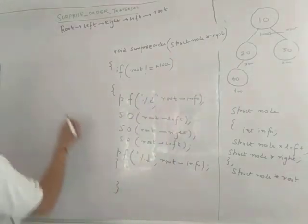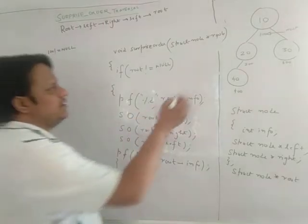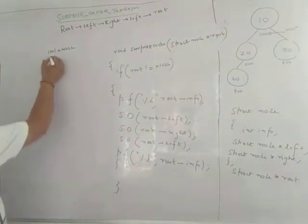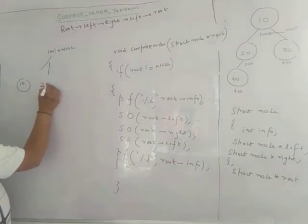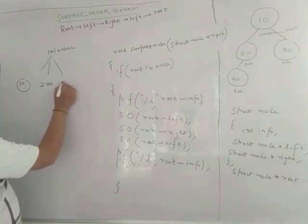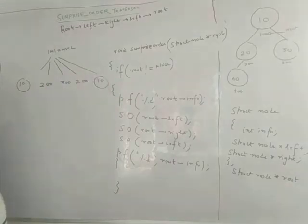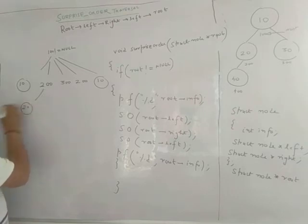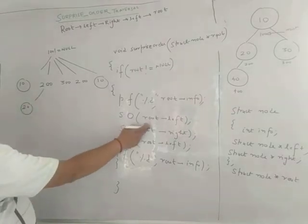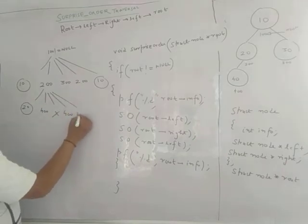The value of root is node 100, so 100 not equal to null — condition is true. First thing printed is root->info, which is 10. Then we call surprise_order on root->left, which is node 200. Then root->right is node 300. Then root->left again is node 200. Then we print info again: 10. Now solving for node 200 — 200 not equals null, condition true. First thing: 200->info is 20. Then root->left of 200 is node 400. Root->right of 200 is null. Root->left of 200 is again 400. Root->info of 200 is 20.